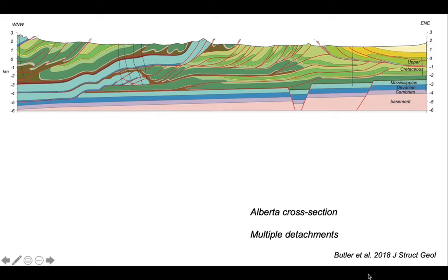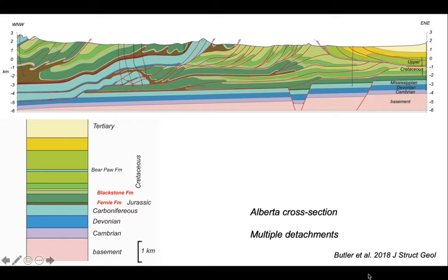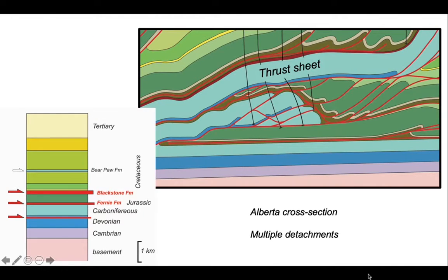So let's have a look at this and see how we can interpret our cross section through this part of Alberta. And the key part about this is there are multiple detachments that have been in play. So let's look at some of this stratigraphy. And there are three detachment horizons that we're going to explore in part of the cross section.